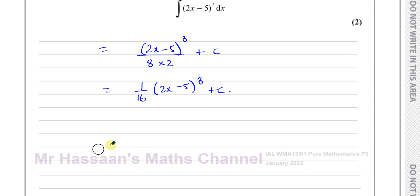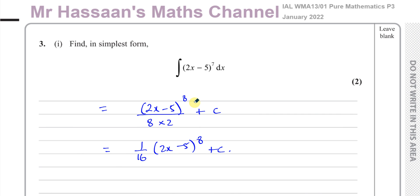So that's how you integrate something in this form. The expression should be multiplied by the differential of what's inside the function. The differential of 2x minus 5 is 2, which is a constant, so outside should be a constant as well — like a 1, it's multiplied by 1. For example, if it was (2x squared minus 5) to the power of 7, I couldn't do this, because the differential of 2x squared minus 5 is 4x, so I'd have to have an x term outside there. Very important. So that's part 1.